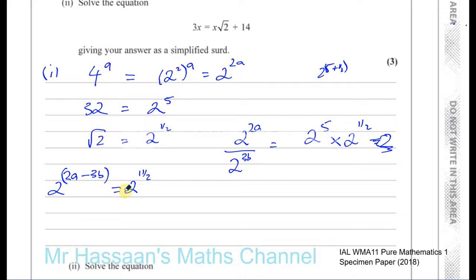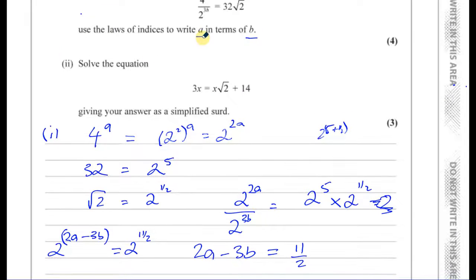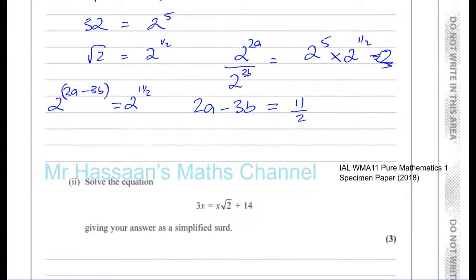So we can say 2a minus 3b is equal to 11 over 2. Now we want to make a the subject of this formula, because it says in the question, it says to write a in terms of b. So it should say a equals, and there should be something there with b in it. So a in terms of b means a equals, and there's something with b in it. A should be the subject.